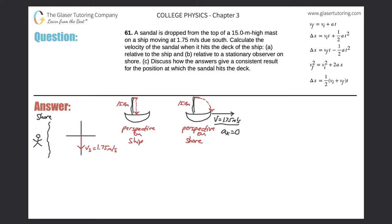Number 61. A sandal is dropped from the top of a 15-meter high mast on a ship moving at 1.75 meters per second due south. Calculate the velocity of the sandal when it hits the deck of the ship: letter A, relative to the ship, and letter B, relative to a stationary observer on shore.